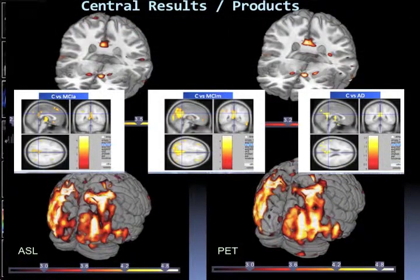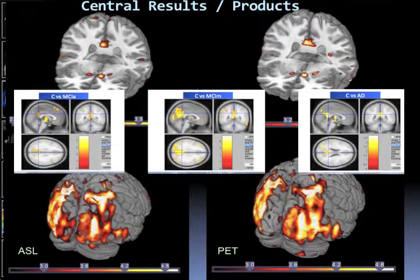We've been working on having reproducible results with ASL in an aging population. This is a comparison between ASL and PET studying Alzheimer's with group studies. On the right you can see the PET results, and on the left you can see ASL — and the studies are quite similar.